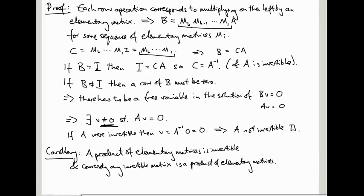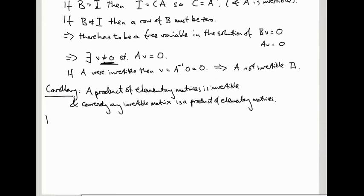So the one direction is relatively easy. If you have a product of elementary matrices, M_K up to M_1, then its inverse is just M_1 inverse up to M_K inverse by the lemma we proved a little while ago, using the formulae for the inverses of elementary matrices that we proved earlier in this lecture.